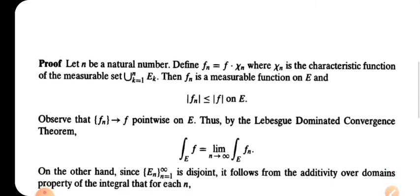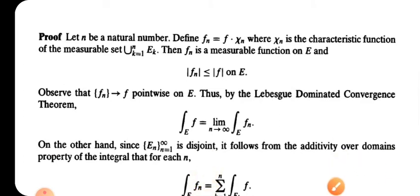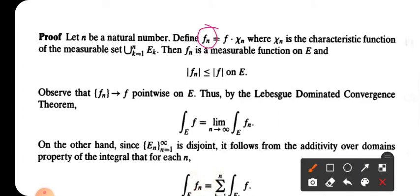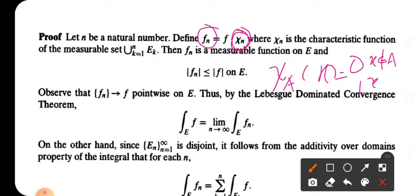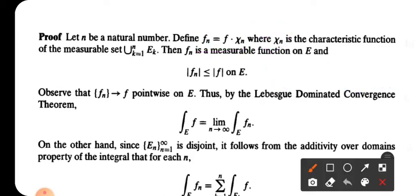We are going to define a function F_n as F times chi_n, where chi_n is the characteristic function of the measurable set — the union from k equal to 1 to 2n of E_k.